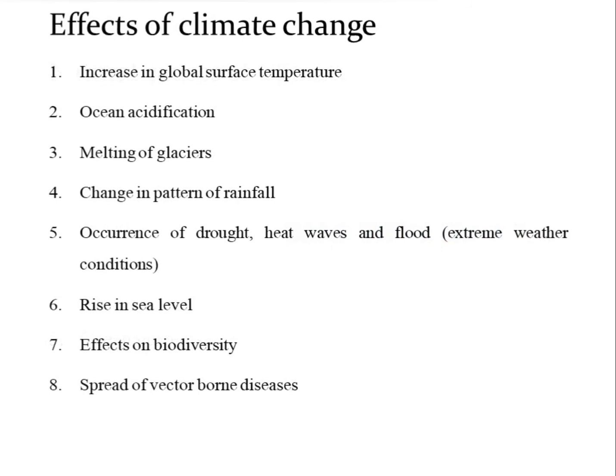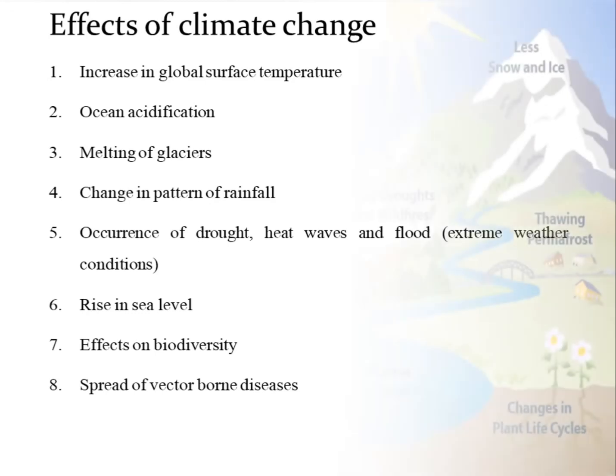The effects of climate change include increase in global surface temperature — that is called global warming. Then ocean acidification, melting of glaciers, change in pattern of rainfall, occurrence of drought, heat waves, etc. Then rise in sea level, effects on biodiversity, and spread of vector-borne diseases — that is actually what happens nowadays.